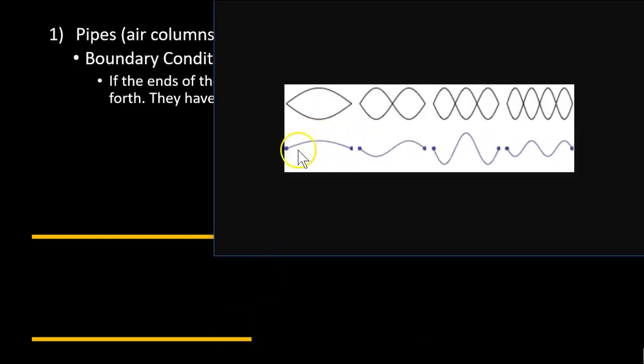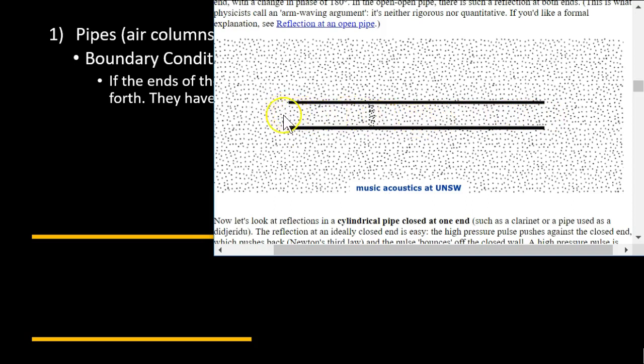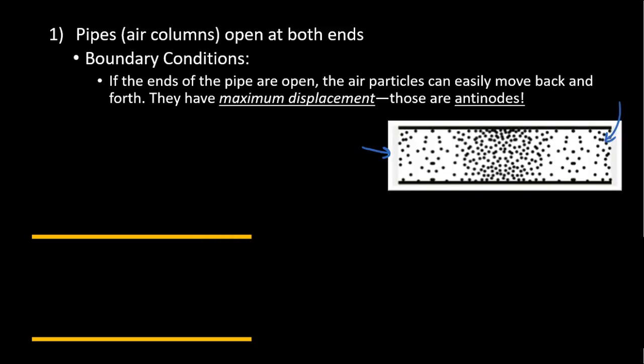Here are just the standing waves for stringed instruments — the boundary conditions are nodes and nodes. Now here I have my pipe. This is a simplified diagram, but we see a wave pulse — we're just watching one individual pulse. Look at what happens when it gets to the ends. These are vibrating air particles. When they get to the end, there's nothing blocking them, so those particles are able to just keep vibrating and they spread out. If these ends are opened up, those air particles are free to vibrate, and therefore they can wiggle back and forth and have their maximum displacement.